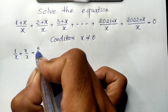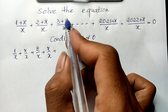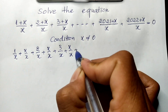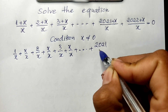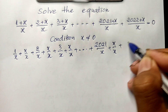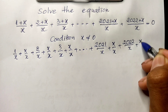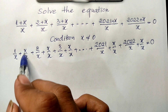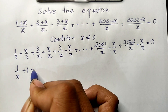Now I can rewrite the equation by splitting each fraction: 1 divided by h plus h divided by h, plus 2 divided by h plus h divided by h, plus 3 divided by h plus h divided by h, plus ... plus 2^21 divided by h plus h divided by h, plus 2^22 divided by h plus h divided by h, equal 0.